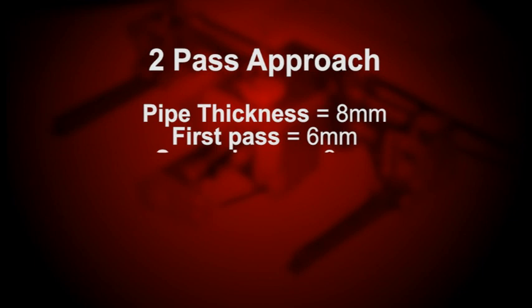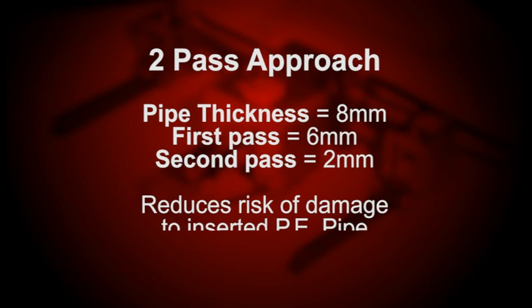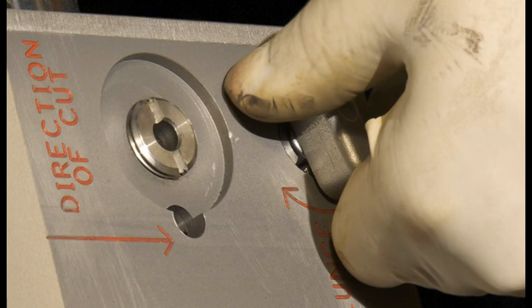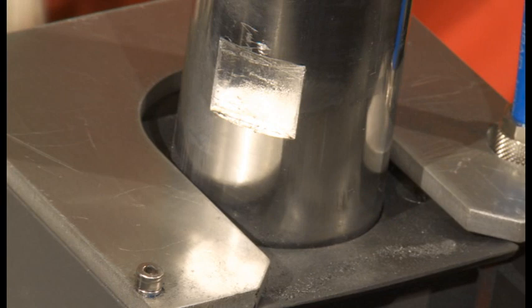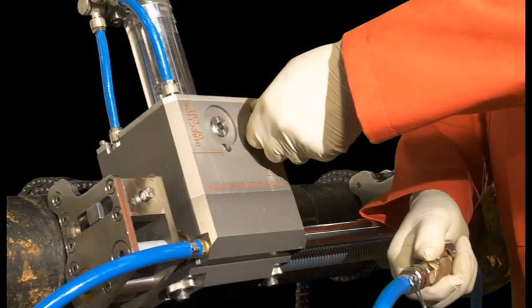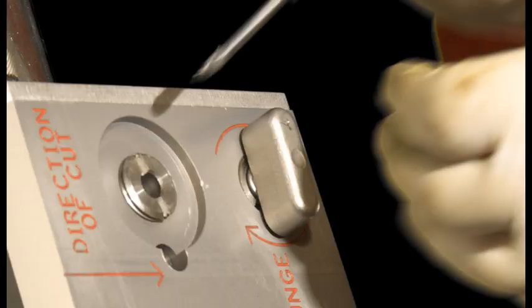even though the Kent cutter is fully capable of making the full 8mm cut in a single pass. This is a cautionary approach to ensure that the inserted pipe is not damaged by an initial cut that is too deep. For the first pass, the plunge handle is set to cut to a depth of six millimeters. One revolution of the plunge handle equals one millimeter of cut.